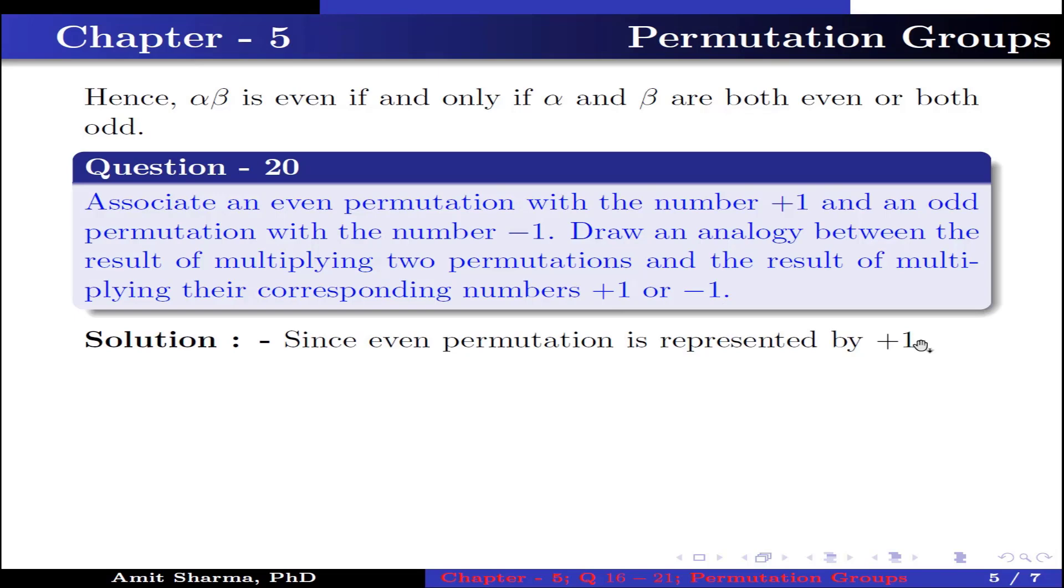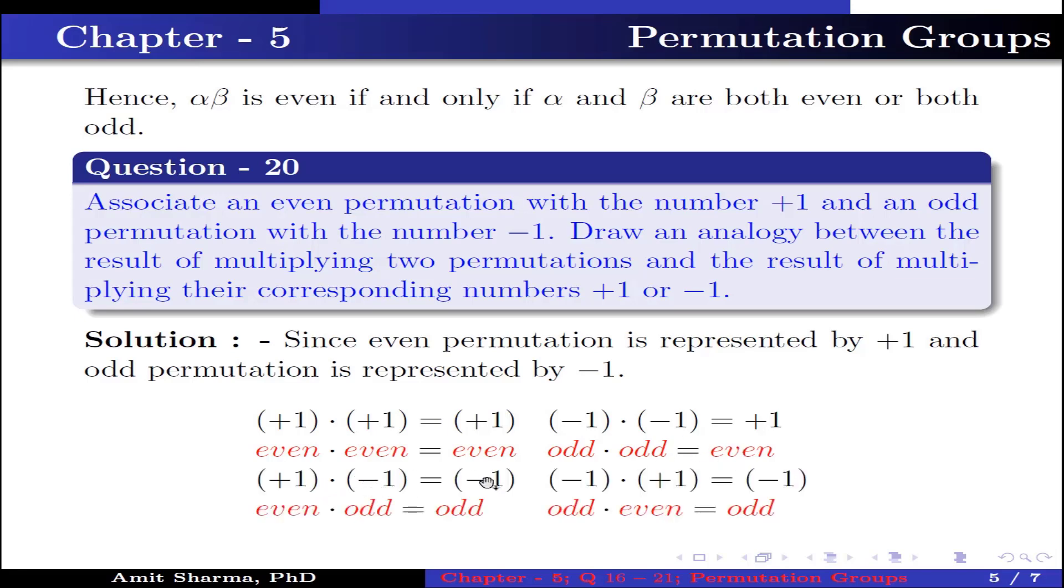Since even permutation is represented by +1 and odd permutation by -1, (+1)·(+1) = +1 means even·even = even. (-1)·(-1) = +1 means odd·odd = even. (+1)·(-1) = -1 means even·odd = odd. (-1)·(+1) = -1 means odd·even = odd.